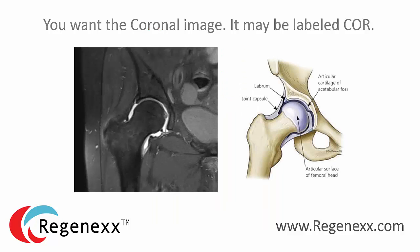You want the coronal image because it's going to be the easiest one to look at, and it may be labeled COR. If you look at how the hip is put together, the hip is a ball-and-socket joint — we have a ball, we have a socket, and then there's the lip around the socket called the labrum. Those are some of the things we'll be looking at.